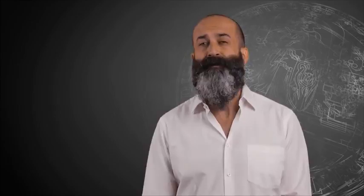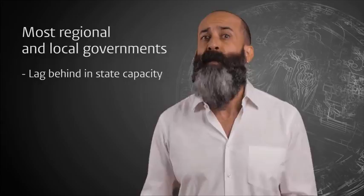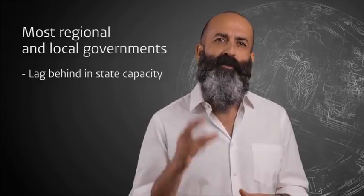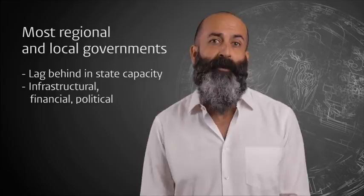But we see very little intergovernmental relations in Africa. In most African cases, the regional and local levels of government still lag behind in state capacity. In South Africa, Ethiopia and Nigeria, and certainly in many of the decentralized unitary states of Africa, local and regional governments do not yet have the capacity—infrastructural, financial, political—to in fact do the things they're supposed to be doing along the who-does-what of the distribution of power.